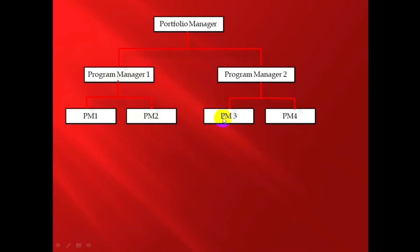Similarly, Project Manager 3, reporting to Program Manager 2, will be responsible for Project 3 under residential, and Project Manager 4, also reporting to Program Manager 2, is responsible for Project 4 under residential.